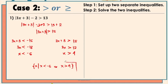This means the possible values that make the inequality true are all numbers less than negative 6, not including negative 6, or all numbers greater than positive 4, not including positive 4.